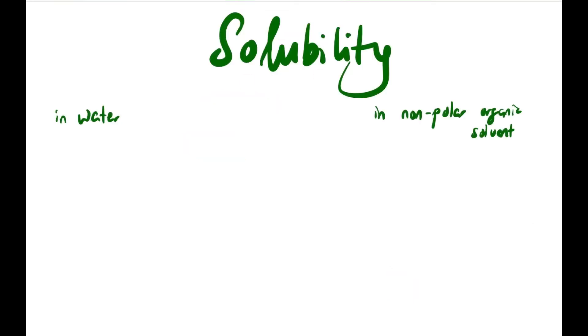The next physical property we will look at is solubility. We will check in two different types of solvents: the first one is in water, and the second one is in non-polar organic solvents.